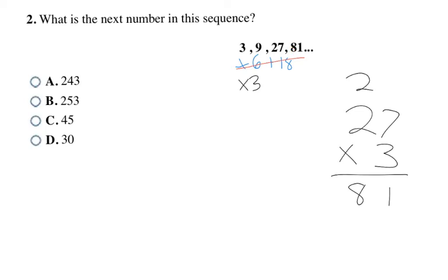To get the next number, I'm going to have to take 81 times 3. So here 3 times 1 is 3, 8 times 3 is 24. So 243 is going to be my next number, which is choice A.